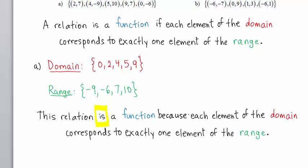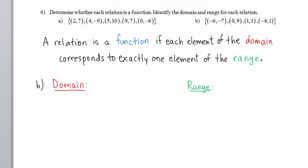Now let's go on to part B. The elements of the domain are negative 6, which we list only once, 0 and 1. Those are the x-coordinates or x-values. The y-coordinates or y-values constitute the range. Negative 7, 1, 3, and 9.